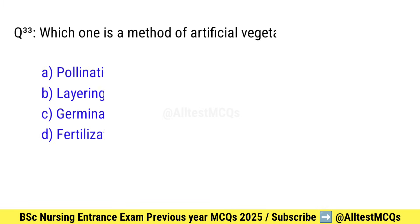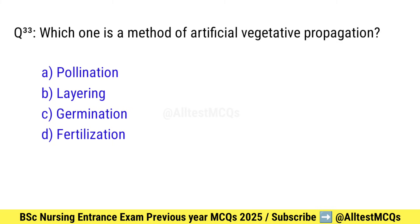Question number 33. Which one is a method of artificial vegetative propagation? Right option is B: Layering.